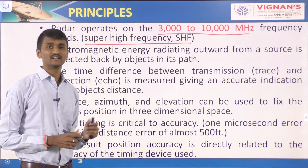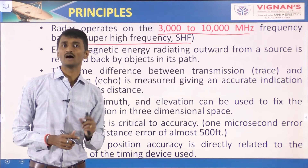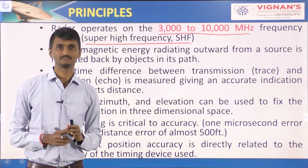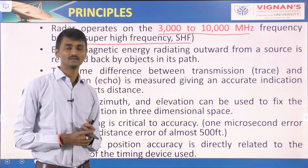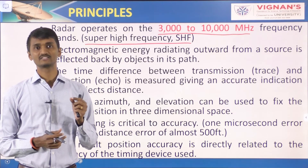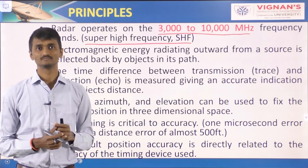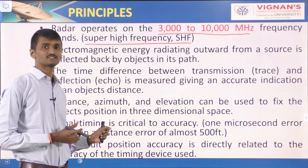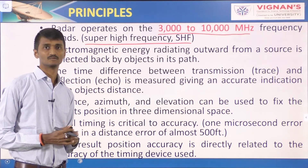The azimuth angle and elevation angle can be used to fix the object's position in three-dimensional coordinates. The signal timing is critical to accuracy — one microsecond error results in a distance error of almost 500 feet. As a result, position accuracy is directly related to the accuracy of the timing device used.